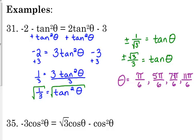I rationalized by multiplying by the square root of three on top and bottom, because we don't leave square roots in the denominator.